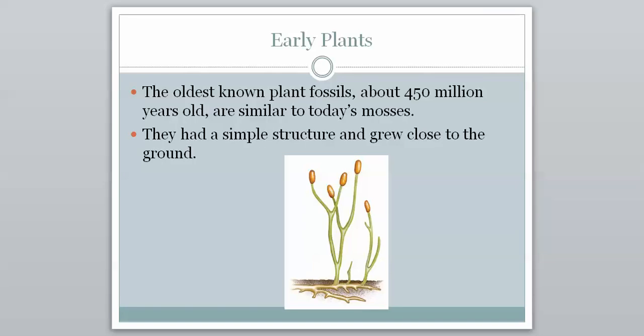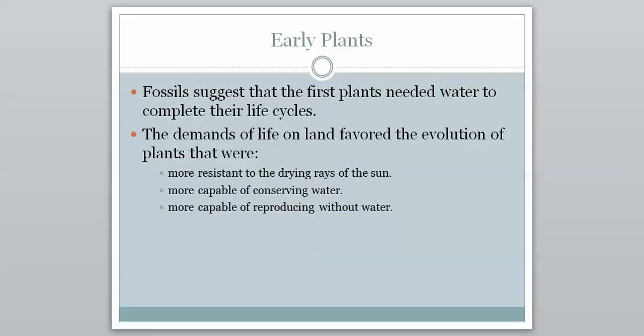The oldest known plant fossils are about 450 million years old, and they're similar to today's mosses. They had a simple structure and grew close to the ground. This is a crude drawing of what we think early plants looked like — we don't have artists from 450 million years ago to give us an exact picture. Our fossil records suggest that the first plants needed water to complete their life cycles, and the demands of life on land favored the evolution of plants.